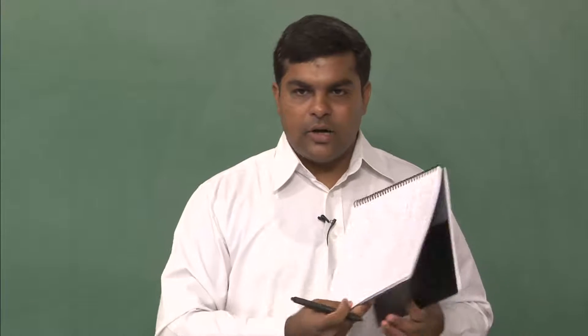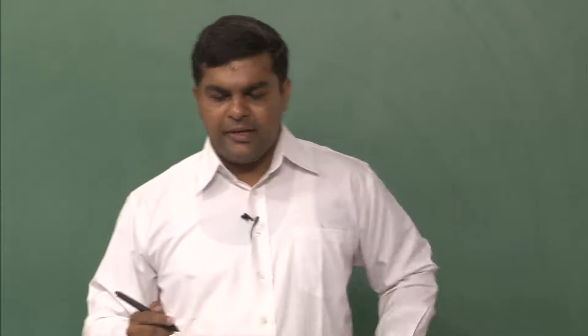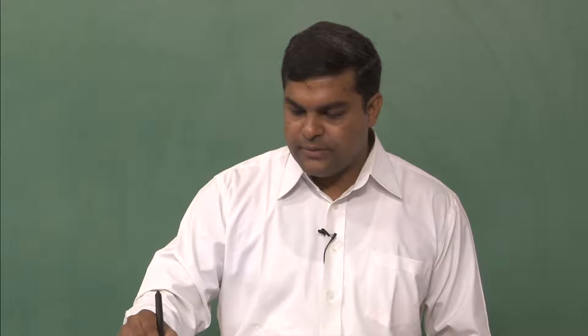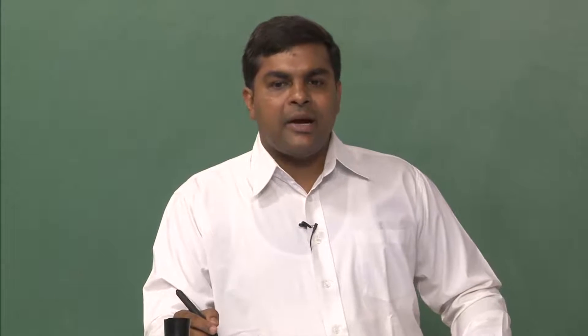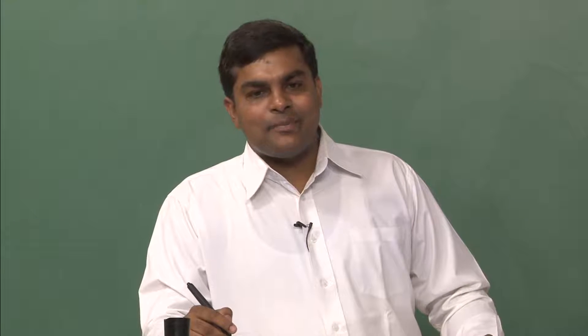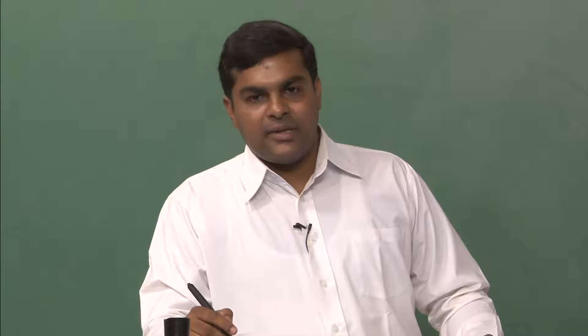Let us start a new chapter called consumer behavior or consumer theory. We were talking about consumers in the last chapter also — we talked about demand and supply. Demand is nothing but consumers' response to market prices in terms of quantity demanded. Quantity demanded decreases as price increases, when everything else is fixed — ceteris paribus. Demand is a downward sloping function.